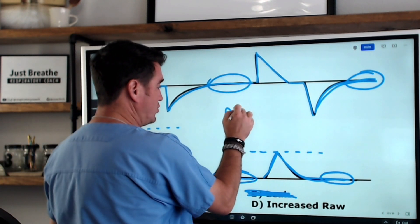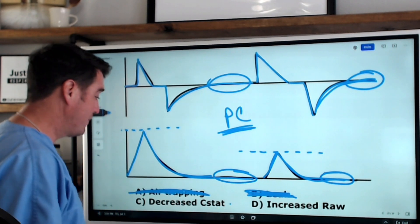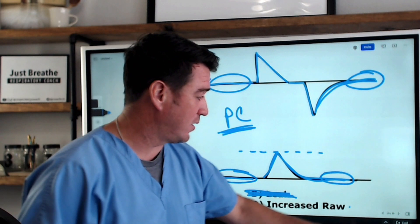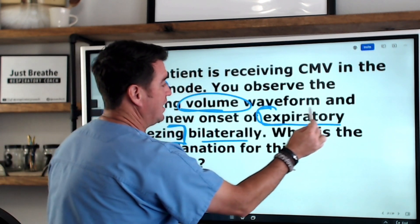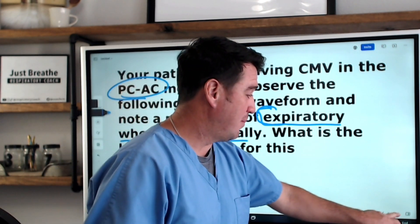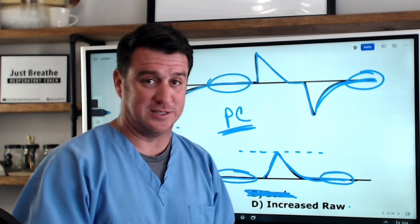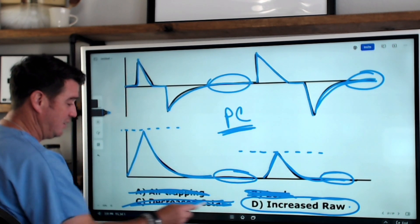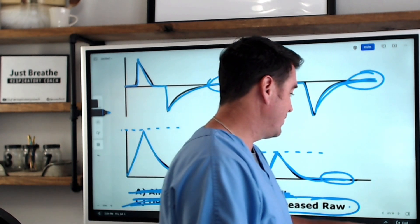Because remember, we're in pressure control. Volume will vary. So is it because the lungs have become stiffer? Or is it because we have an increase in our airway resistance? And remember, I told you something very important in this scenario. There's a reason why they told you that there was a new onset of expiratory wheezing. Expiratory wheezing is an indication of bronchospasm. Bronchospasm will cause your airway resistance to increase. And that is the correct answer to this question. It is not a static compliance issue. The bronchospasm is saying we've got an increase in airway resistance because the scenario told us that. So that's the volume waveform.